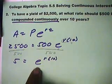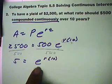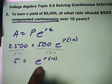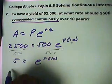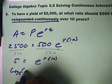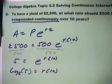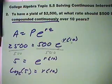Next, getting rid of the e. We're going to use the property that converts exponentials into logarithms. So this will become log base e of 5 equals 10r.